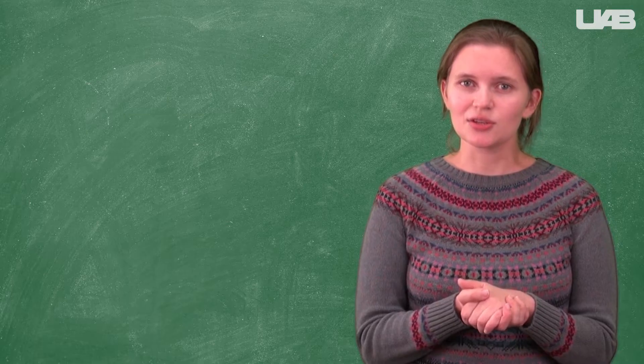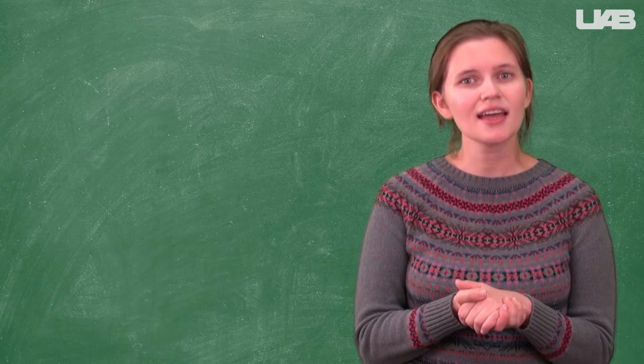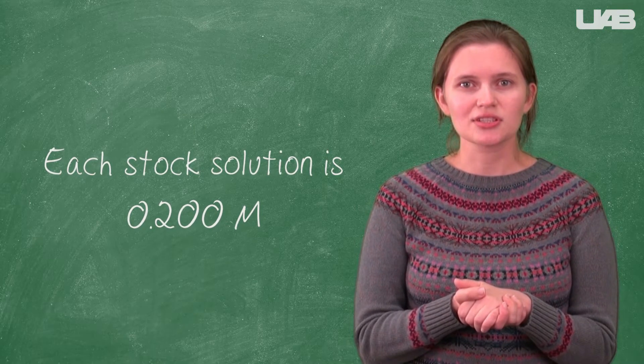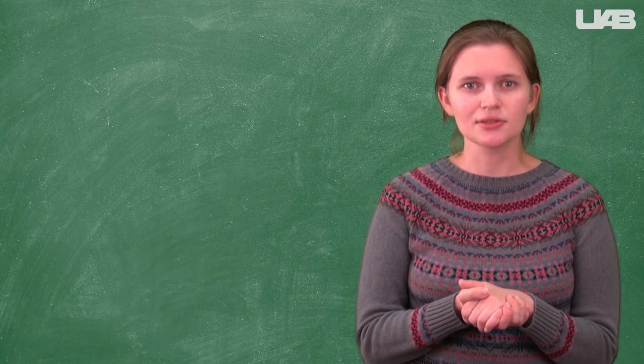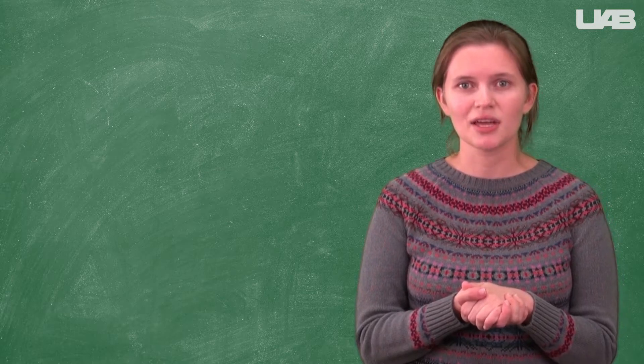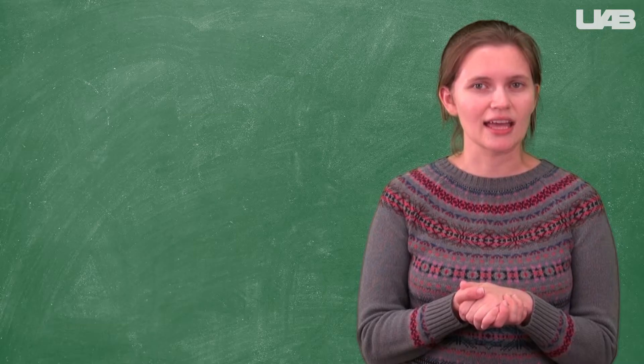In Exercise 2, we will prepare a series of dilutions of both a strong acid, hydrochloric acid, and a weak acid, acetic acid. Each stock solution is 0.200 molar. You will need to use the serial dilution technique that you recently did during the kinetics lab to make at least four dilutions of both the hydrochloric acid and the acetic acid.